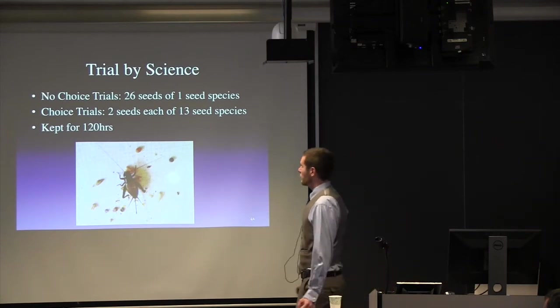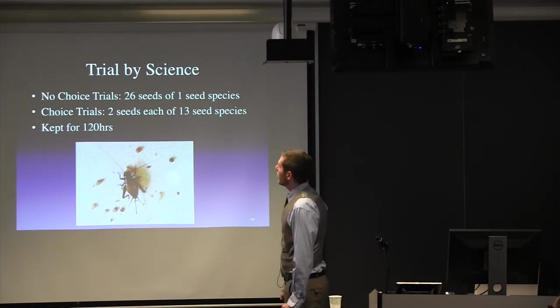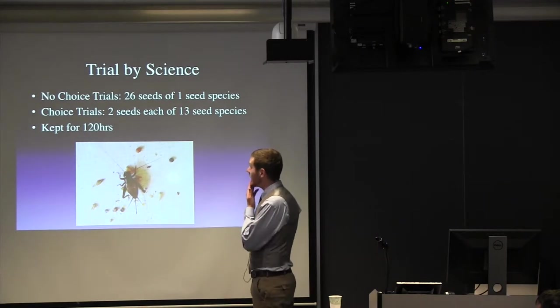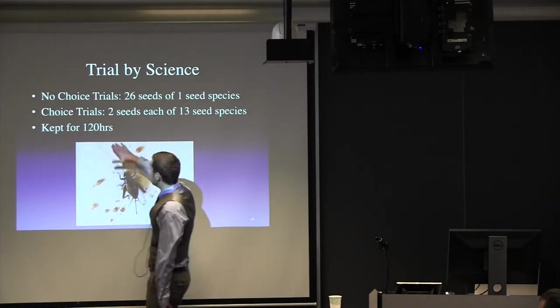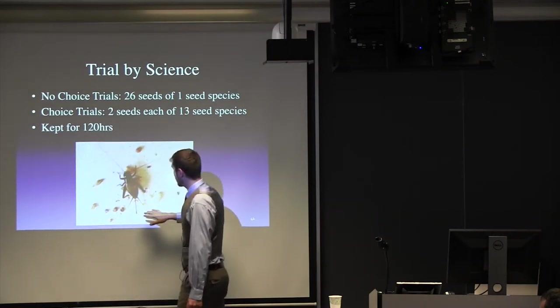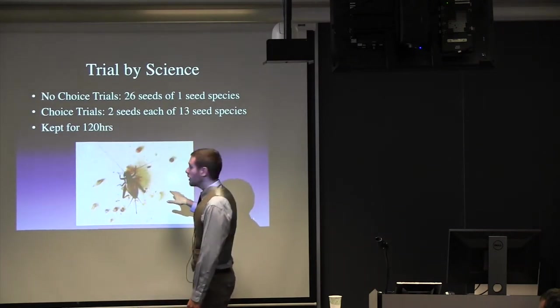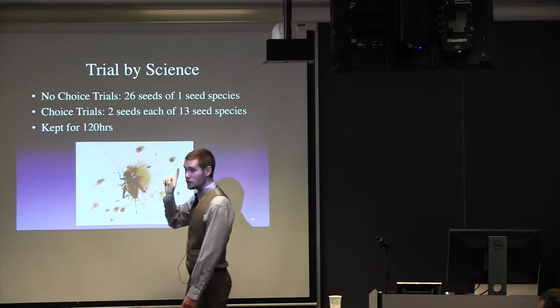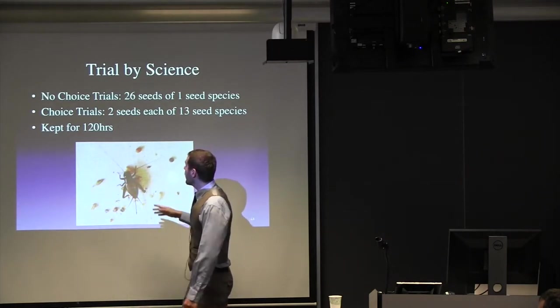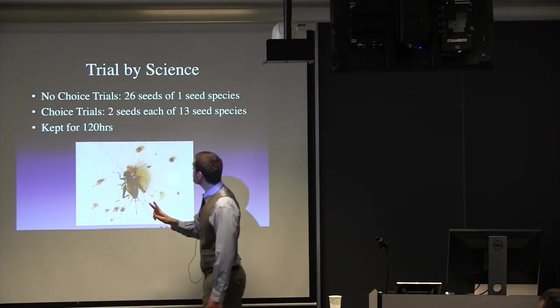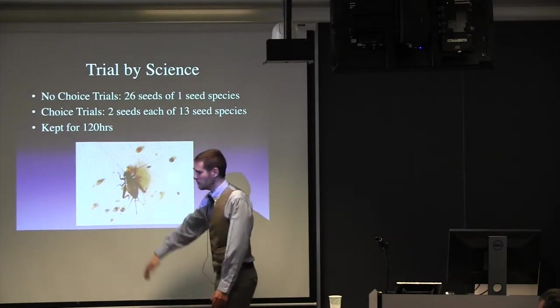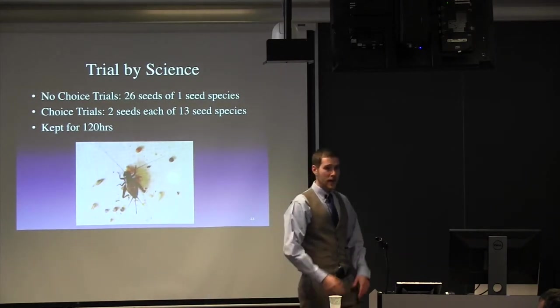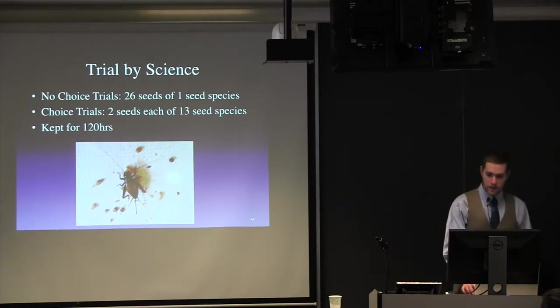So after they had been cooled off in the fridge, they were tested in no-choice trials and choice trials. So again, to reiterate, in these no-choice trials, they were locked up in a petri dish with 26 seeds of just one seed species. And then the choice trials, it was two seeds each of 13 species. And we kept them in there for five days. And at the end, counted the seeds to see what they liked to eat.